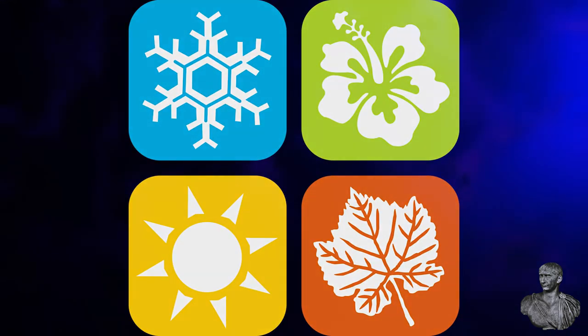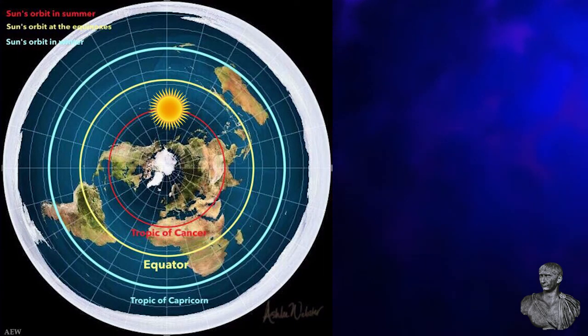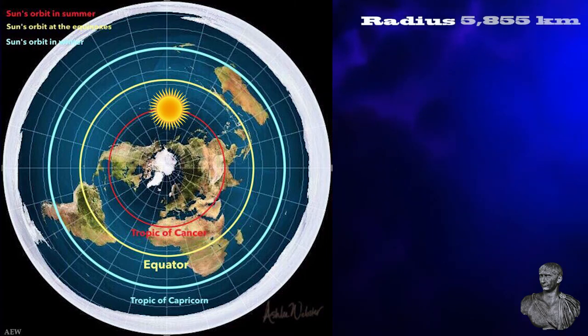And let's not forget the problem with the seasons. Let's do some simple math so even the flat arts can follow along. When it comes to the seasons, your model would mean that the sun changes its orbit from the Tropic of Cancer, which on your model have a radius of 5,855 kilometers.